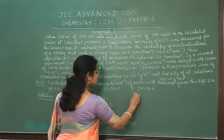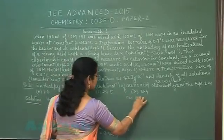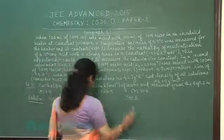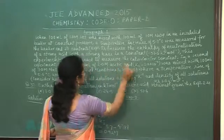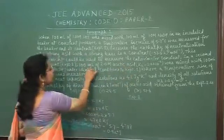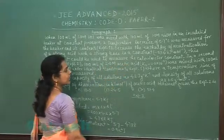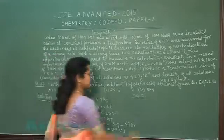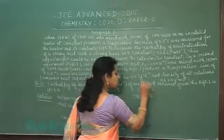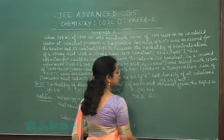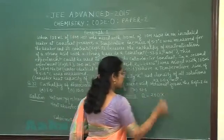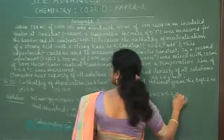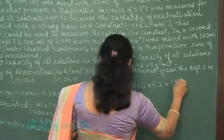Second experiment. Calorimeter constant remains constant for the apparatus. In second experiment a weak acid, that is 100 milliliter of 2 molar acetic acid, was mixed with 100 milliliter of 1 molar NaOH. So in this case we will calculate the heat released. Q is equal to M S T. Mass is 200, specific heat capacity 4.2, and temperature rise is given 5.6.